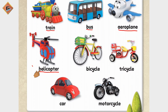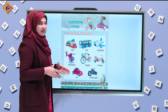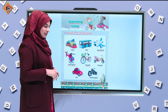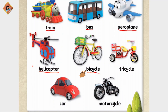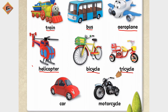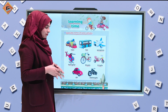The next one is bicycle. You will remember when we studied unicycle — it had one wheel. Bicycle has two wheels. Next is tricycle — one, two, three — it has three wheels, so it is tricycle. Next is car, and then motorcycle.